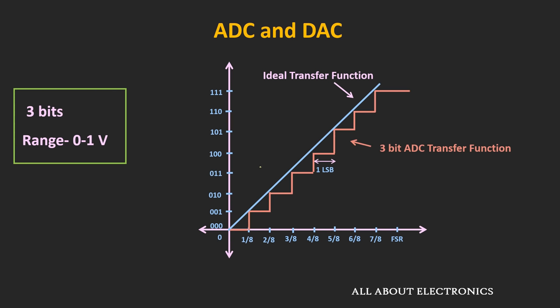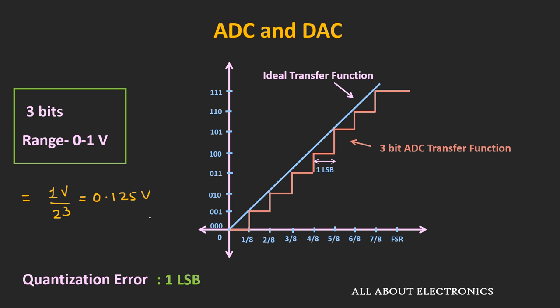This graph shows the transfer function of a 3-bit ADC with a full-scale range of 1V. The transfer function looks like a staircase, and the blue line shows the ideal transfer function — if resolution were infinite, it would be a straight line. For this 3-bit ADC, the minimum detectable voltage equals 1V / 2³ = 0.125V. Whenever the input is between 0 and 0.125V, it is considered as 0, and the output changes only when the input goes above 0.125V. Due to this quantization process, error is introduced in the output, known as the quantization error, which equals 0.125V for this ADC.